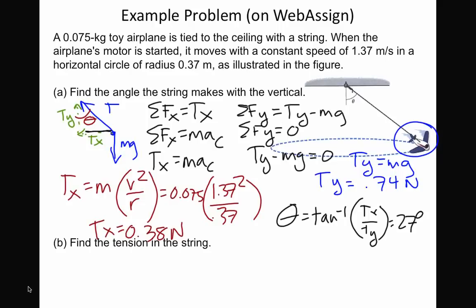To find the tension, it's a little easier because now we know the vector components. It's just Pythagorean theorem, right? So T is the square root of Tx squared plus Ty squared. Plug all that in and you get 0.83 newtons.